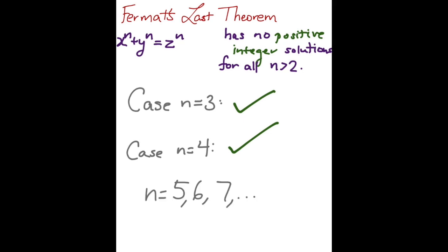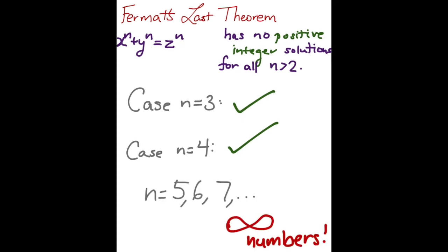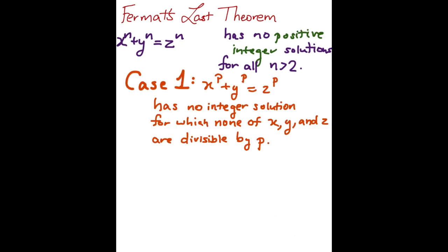Our girl Sophie knew that proving each individual n didn't help because there are infinite numbers. So she began to think of a better way. She split Fermat's Last Theorem into two fundamental cases, and if both were proven, the theorem could be proven.